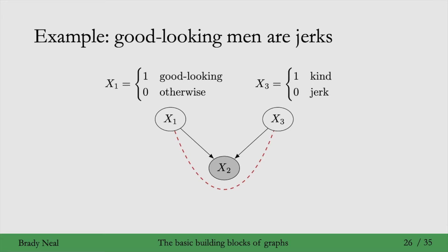So, you get 1 for x1 if you're good-looking, 0 otherwise. And you get 1 for x3 if you're kind and 0 if you're a jerk. And, importantly, x1 and x3 are independent in the general population, when you're not conditioning on anything.